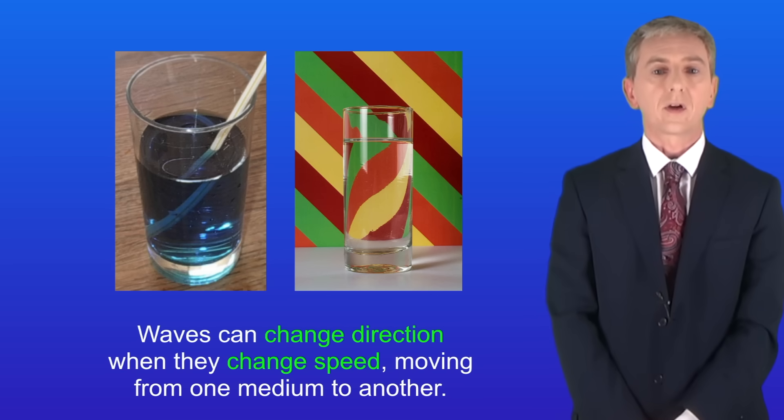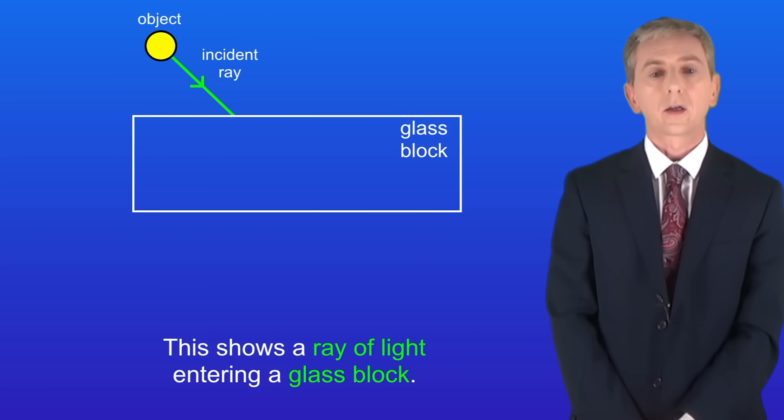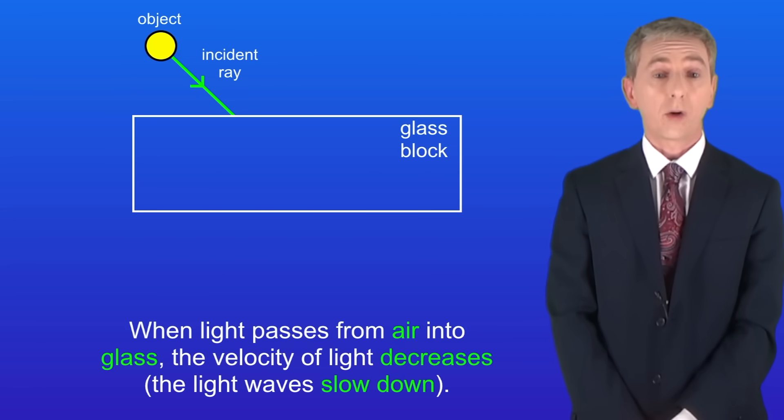So the best way to illustrate that is with a ray diagram. This shows a ray of light entering a glass block. Now when light passes from air into glass the velocity of light decreases. In other words, the light waves slow down.